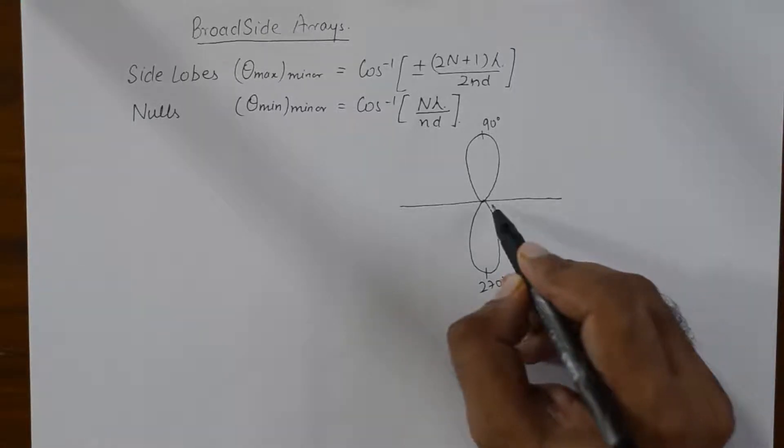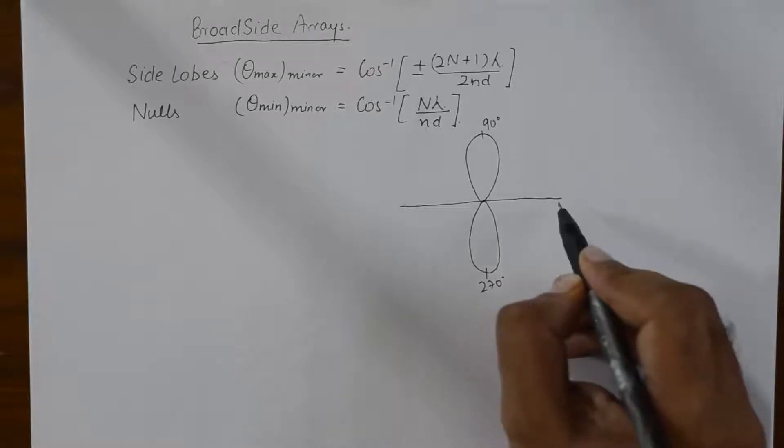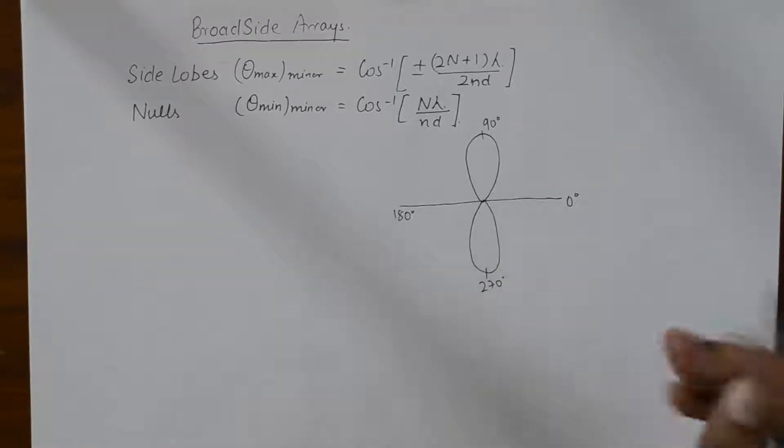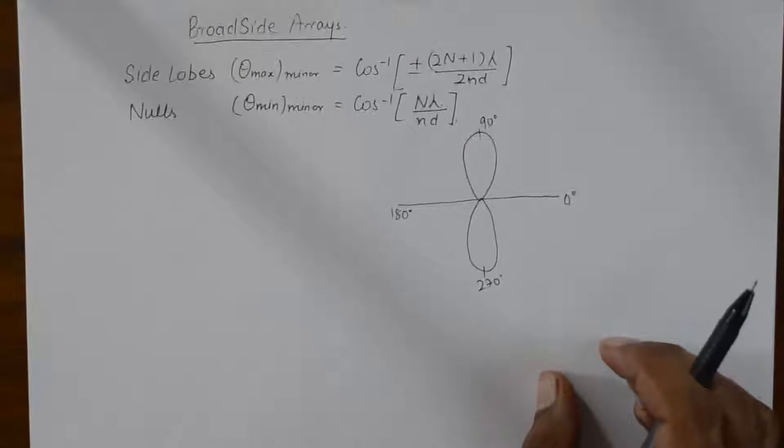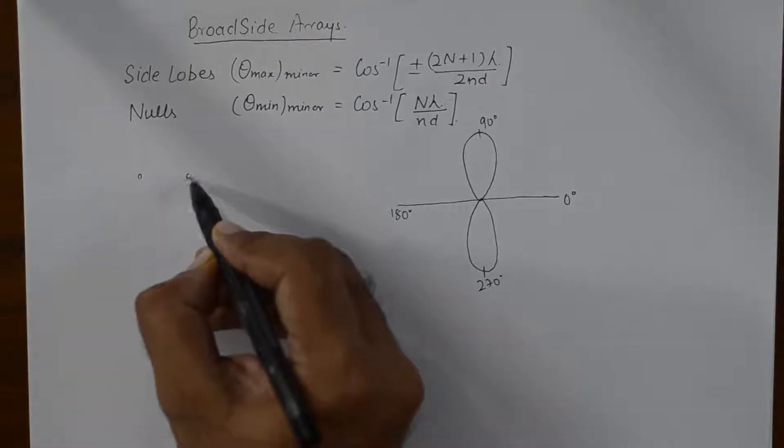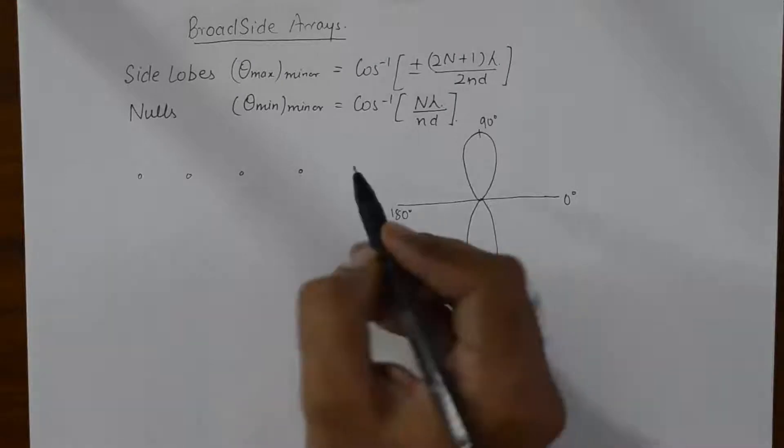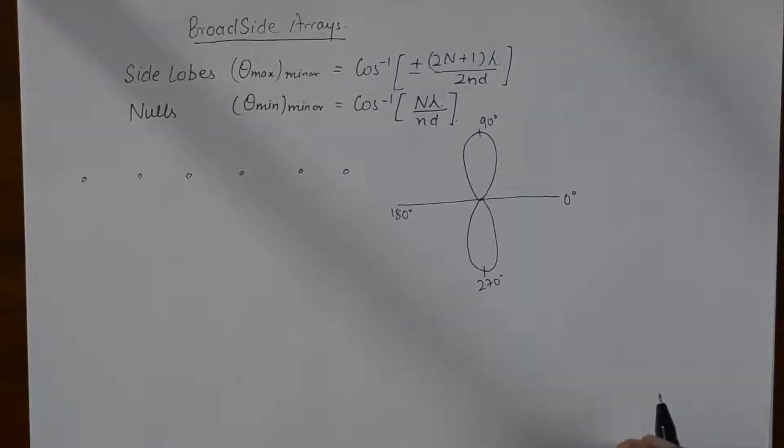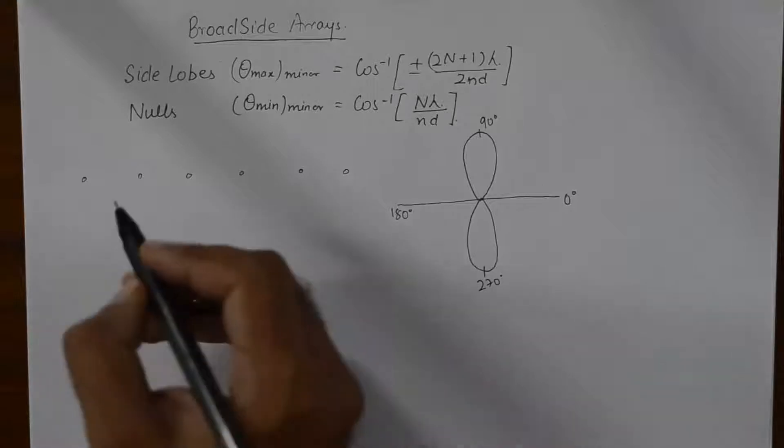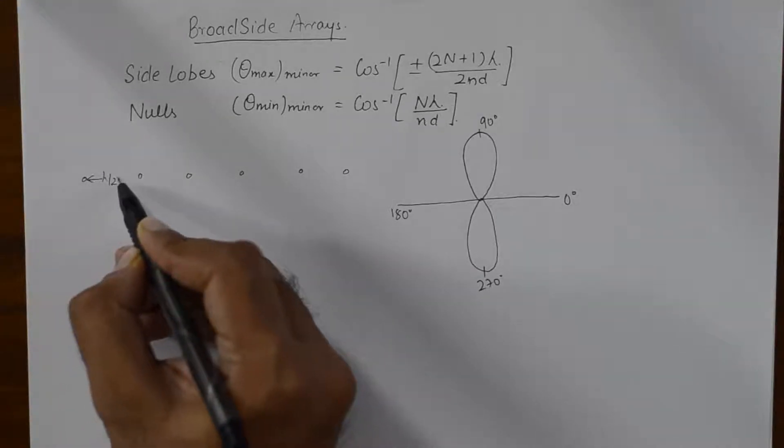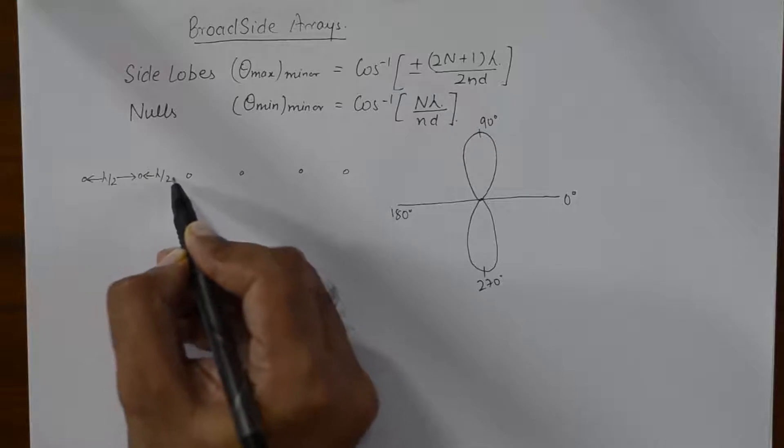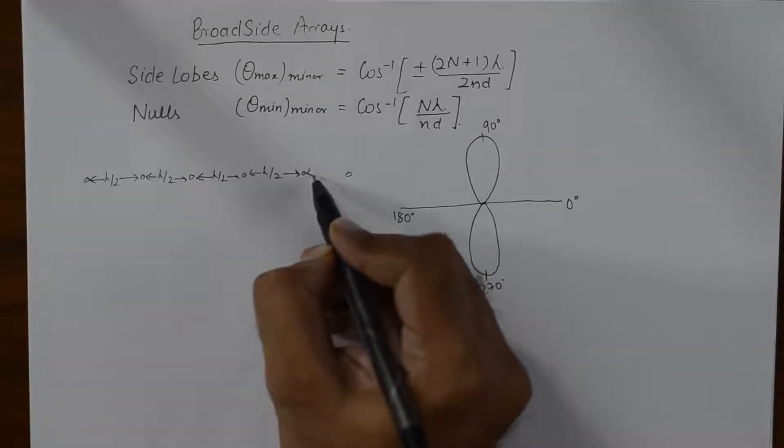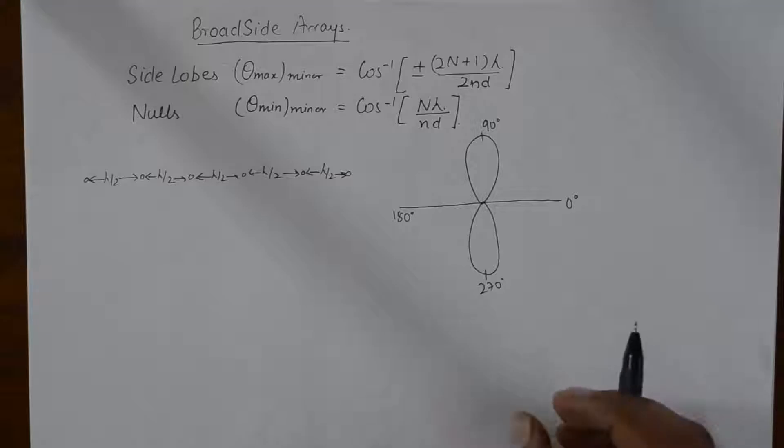And the principal null, the angle of no radiation, will be 0 degrees and 180 degrees. But when the number of antenna elements increase, for example, we take a broadside array of six elements and all of them are separated by a distance of lambda by 2.